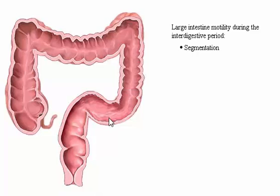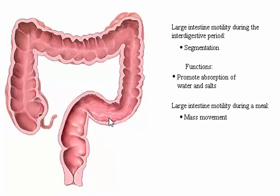In summary, the type of motility in the large intestine during the interdigestive period is segmentation. This repetitive kneading movement promotes absorption of water and salts. During a meal, segmentation is replaced by a mass movement. These intense contractions propel the feces into the rectum from which they may be evacuated.